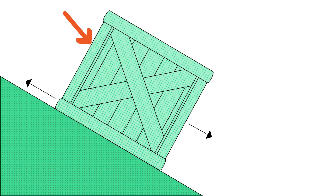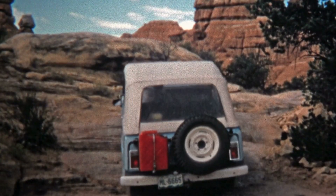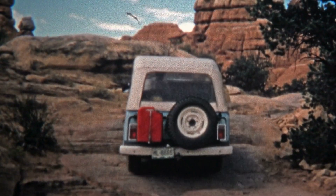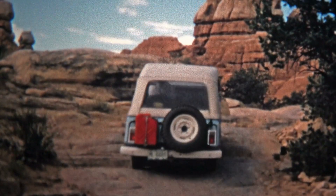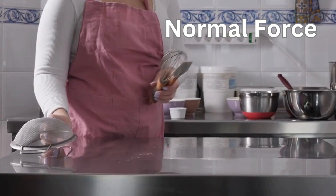Two, the force that prevents an object from moving when it comes into contact with another surface is known as friction. Friction can be advantageous — for example, traction — or it can be harmful — for example, energy loss.